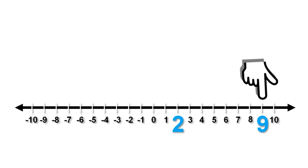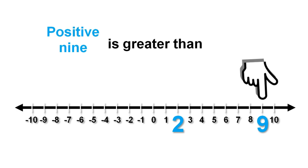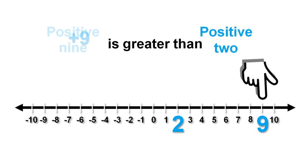If we move from left to right on the number line, the numbers get bigger. Positive 9 is further to the right than positive 2, so we can say that positive 9 is greater than positive 2.